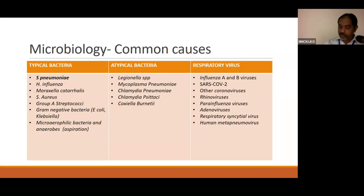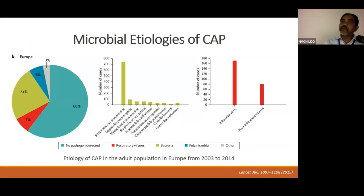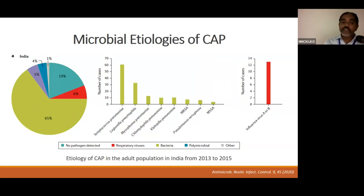The microbial etiology of CAP differs by region. In the USA, 61% of patients have no pathogen detected, and respiratory viruses are the commonest organism demonstrated to cause pneumonia. Europe has a similar pattern, but in contrast to USA, bacteria are more commonly demonstrated as the causative organism. In India, only 6% is due to respiratory viruses and 65% is due to bacterial infections, though this epidemiology is largely reflected by the amount of reporting done.